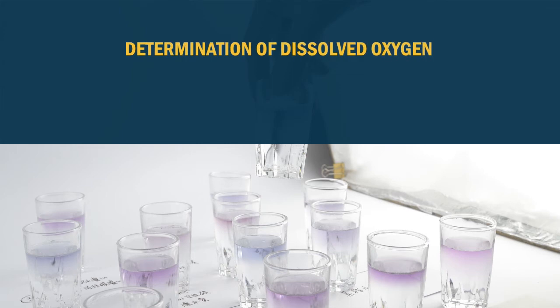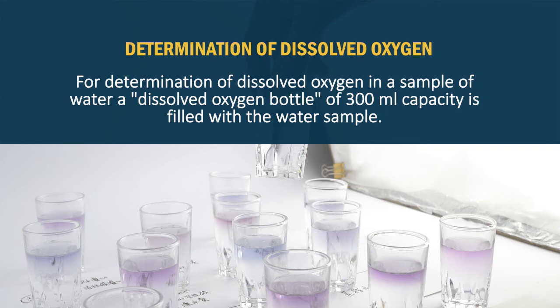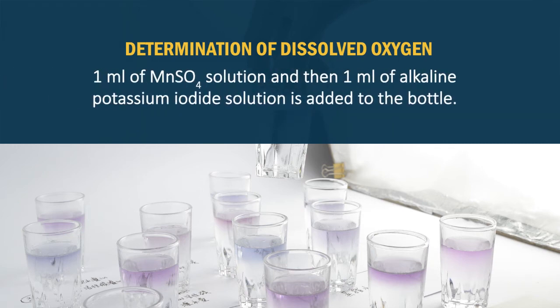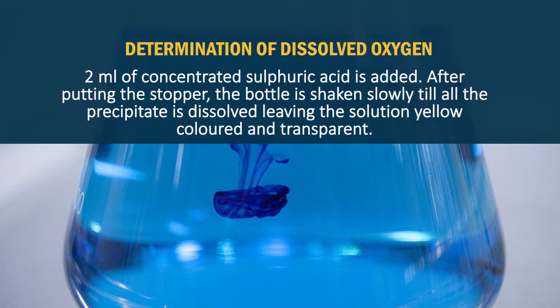Determination of dissolved oxygen: the presence of oxygen in water in dissolved form keeps water fresh and sparkling, but excess quantity causes corrosion to pipe material. For drinking purposes, the permissible limit is 4.8 mg per liter. A dissolved oxygen bottle of 300 ml capacity is filled with the water sample. 1 ml of MnSO4 solution and then 1 ml of alkaline potassium iodide solution is added to the bottle. If oxygen is present, a white precipitate of MnO2 will be formed. If a brown precipitate is found, the bottle is shaken 15 to 100 times and the precipitate is allowed to settle. 2 ml of concentrated sulfuric acid is then added.